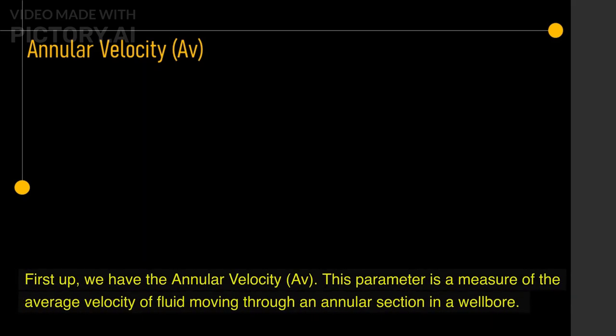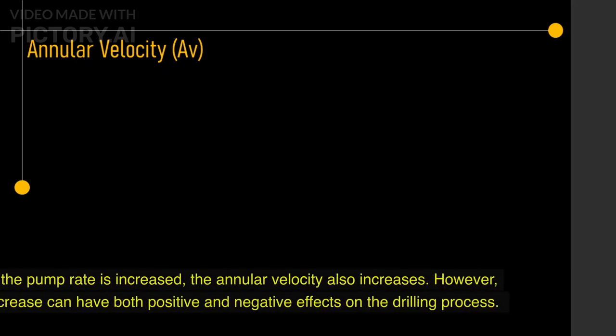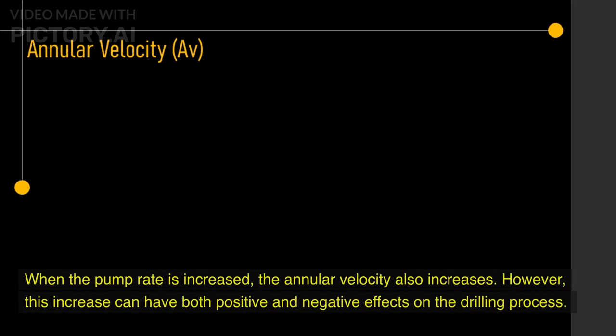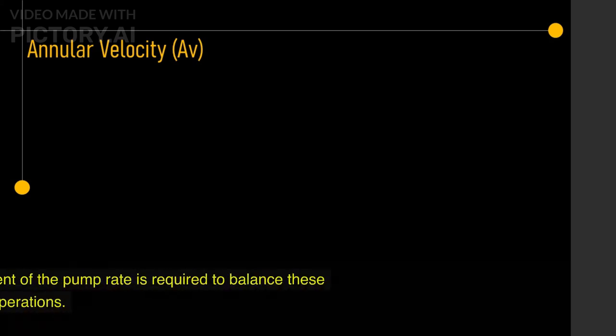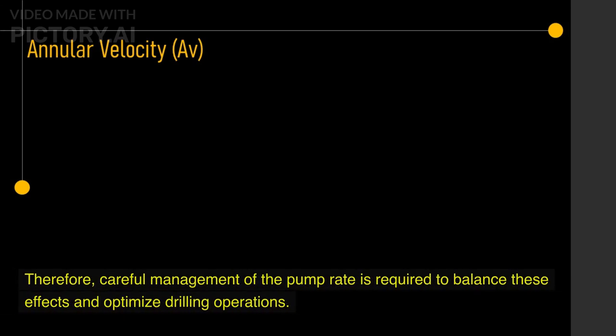First up, we have the annular velocity, AV. This parameter is a measure of the average velocity of fluid moving through an annular section in a wellbore. When the pump rate is increased, the annular velocity also increases. However, this increase can have both positive and negative effects on the drilling process. Therefore, careful management of the pump rate is required to balance these effects and optimize drilling operations.